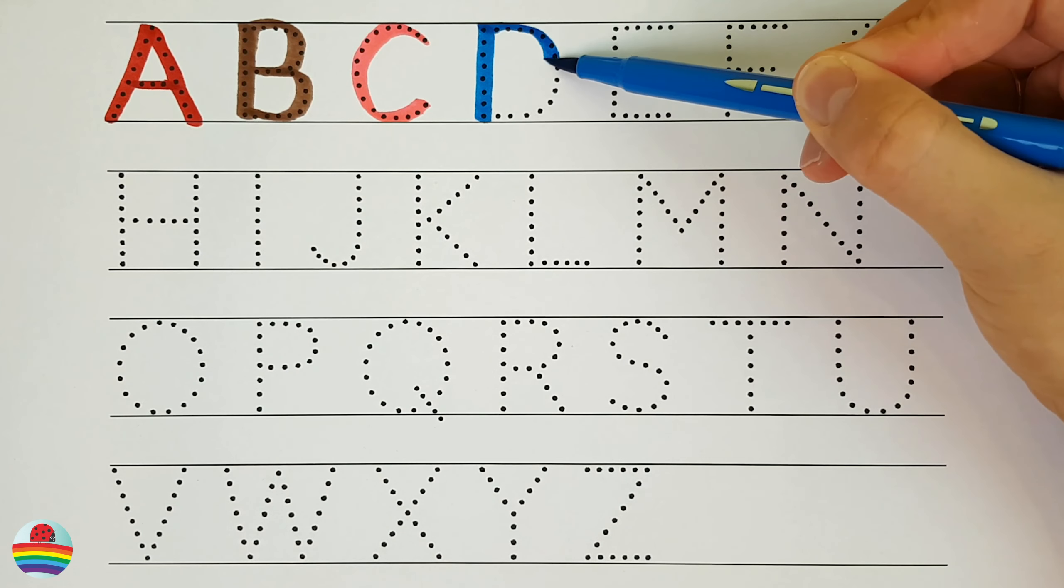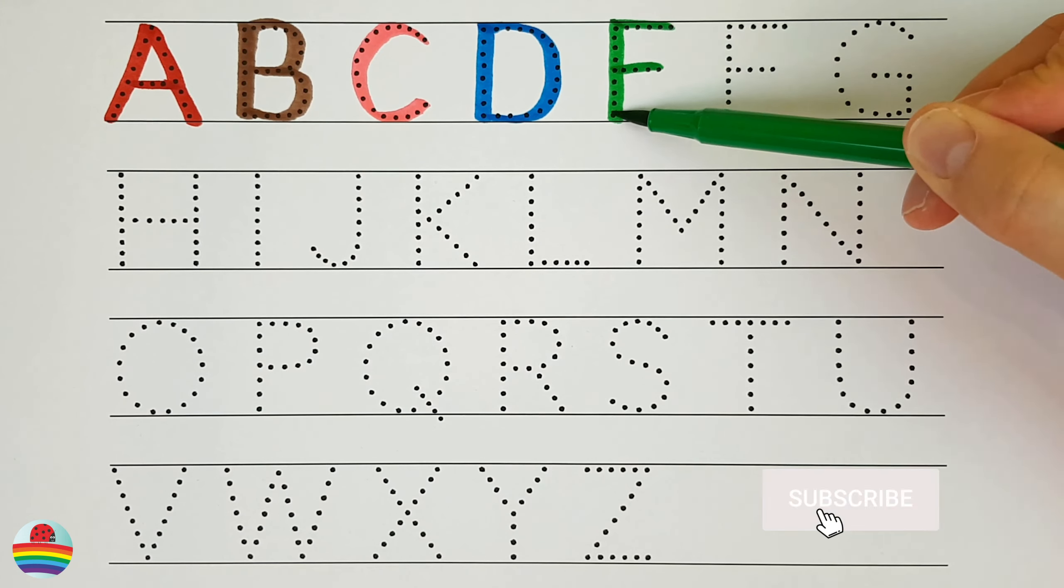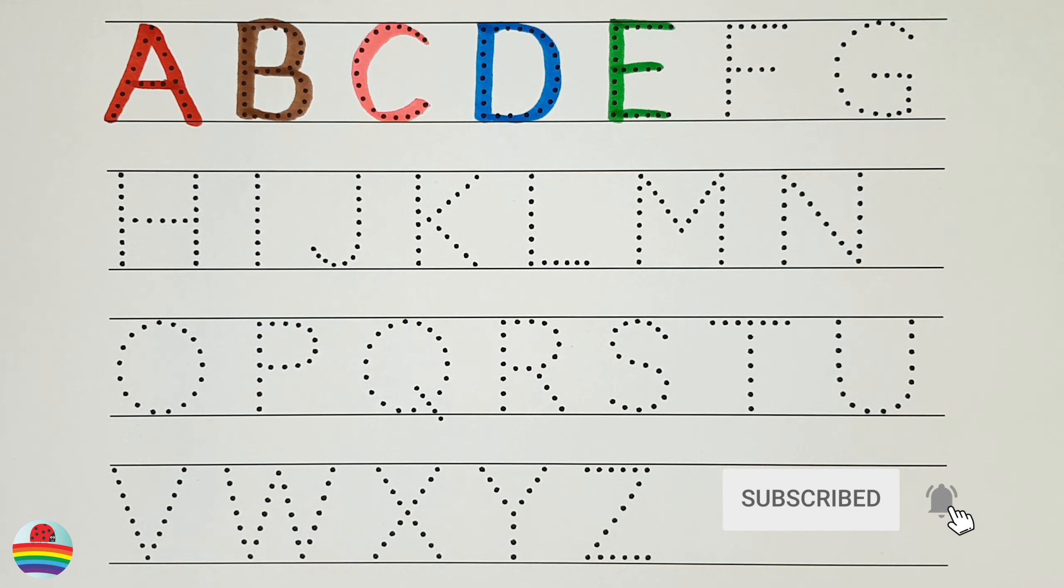D. D is for dolphin. E. E is for echidna. F.